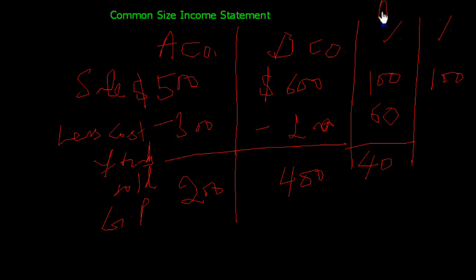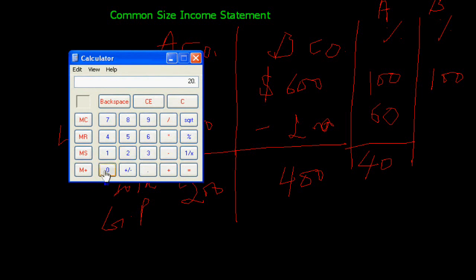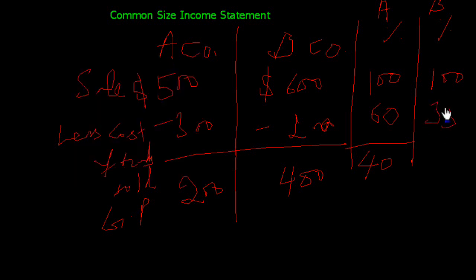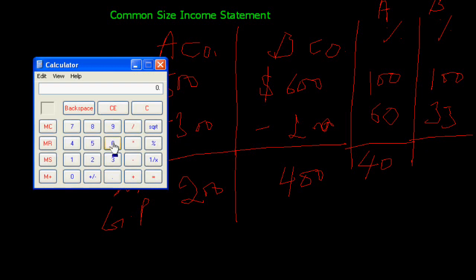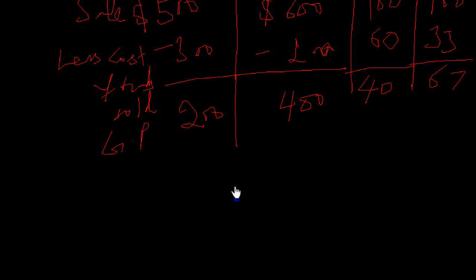The balance 40% is our gross profit in Company A. In Company B we calculate: 200 divided by 600, multiplied by 100 — that is 33%. So the gross profit of Company B is 67%. Like this we will also handle the other items.